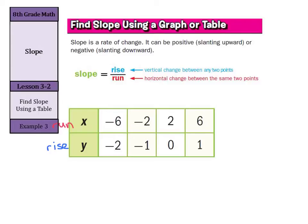Now, rise over run is a good way of looking at slope. But another way of looking at slope is your change in y divided by your change in x. So when we look for the change in y, we are going to go from here to here as we calculate.